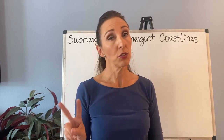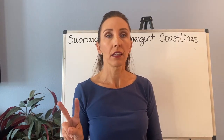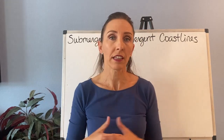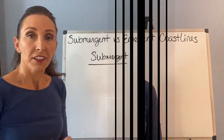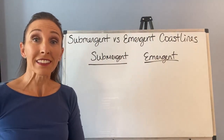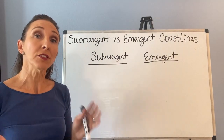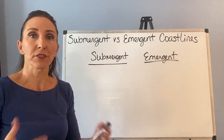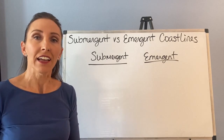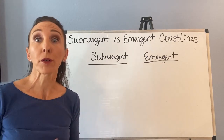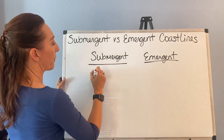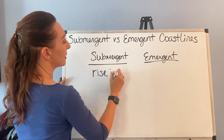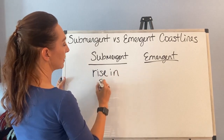We can accomplish that two different ways. The first way is we can play with sea level, and the second way is we can play with land level. If we were to raise sea level, then that would start to drown our coastline, and so we'd be submerging it. A submergent coastline could be from a rise in sea level.